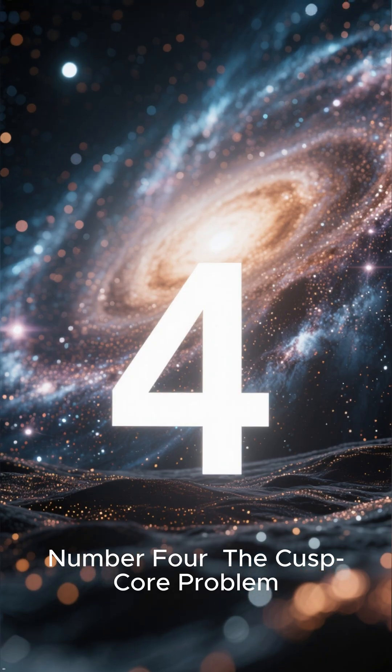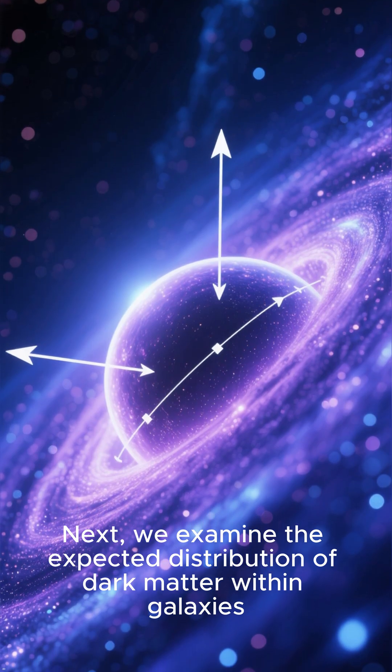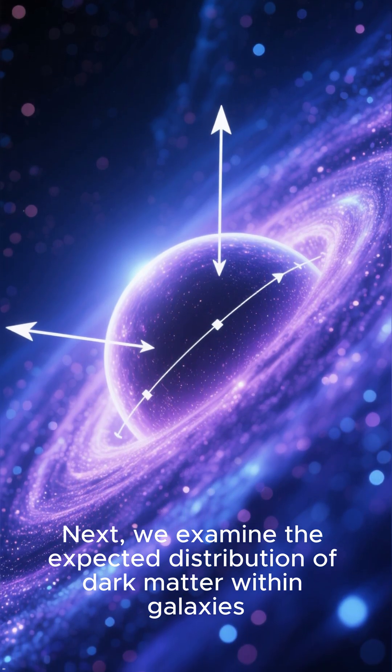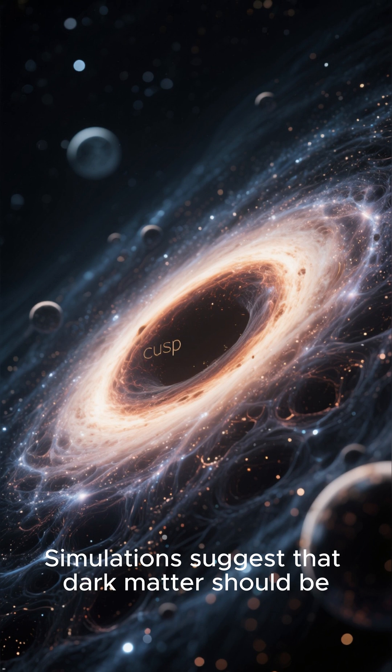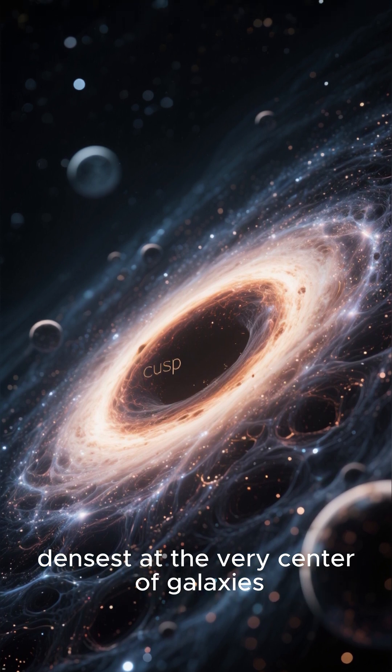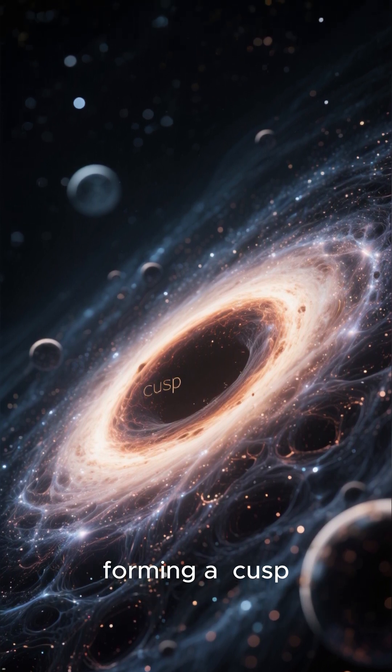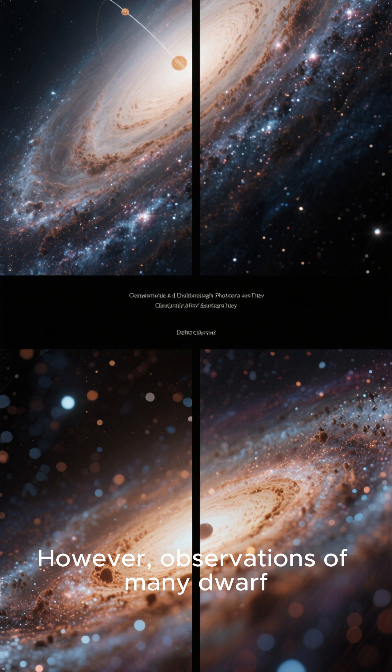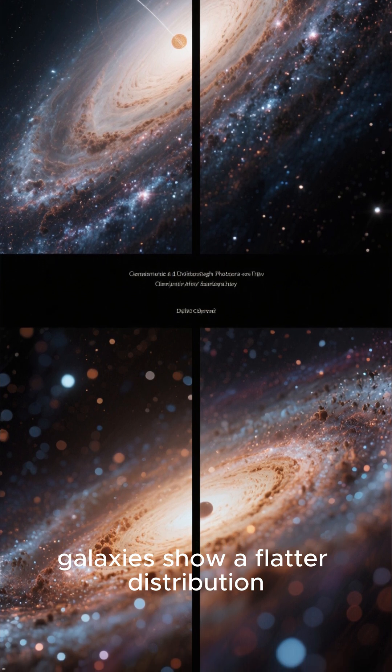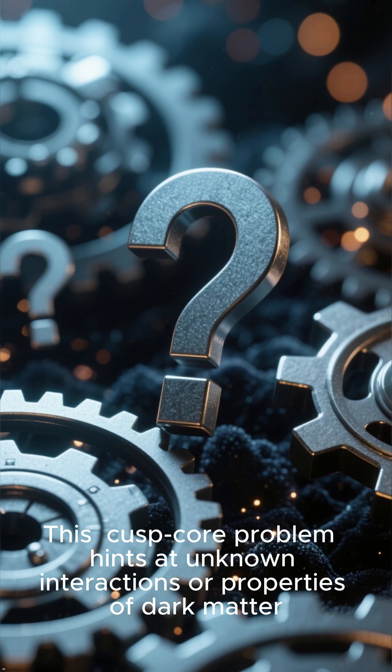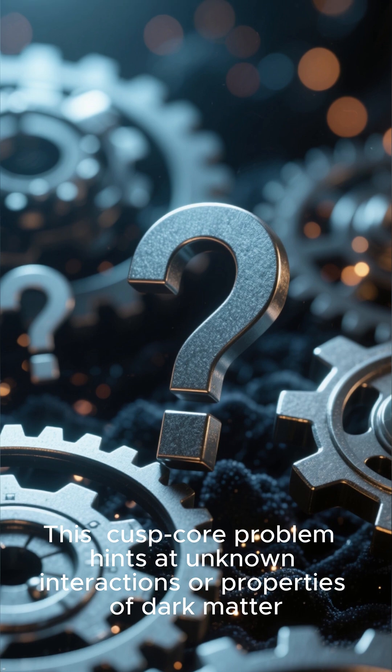Number 4: The Cusp Core Problem. Next, we examine the expected distribution of dark matter within galaxies. Simulations suggest that dark matter should be densest at the very center of galaxies, forming a cusp. However, observations of many dwarf galaxies show a flatter distribution, or a core. This cusp core problem hints at unknown interactions or properties of dark matter.